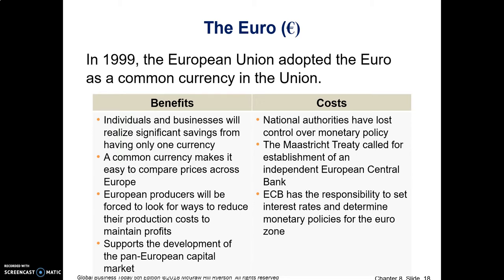Because they created the European Central Bank, it is responsible for setting interest rates and determining monetary policies for the Eurozone, which creates problems. As I said, Greece, Germany, and Italy may all need different things. That gets us into another drawback — the optimal currency area, or zone, mentioned in the textbook.